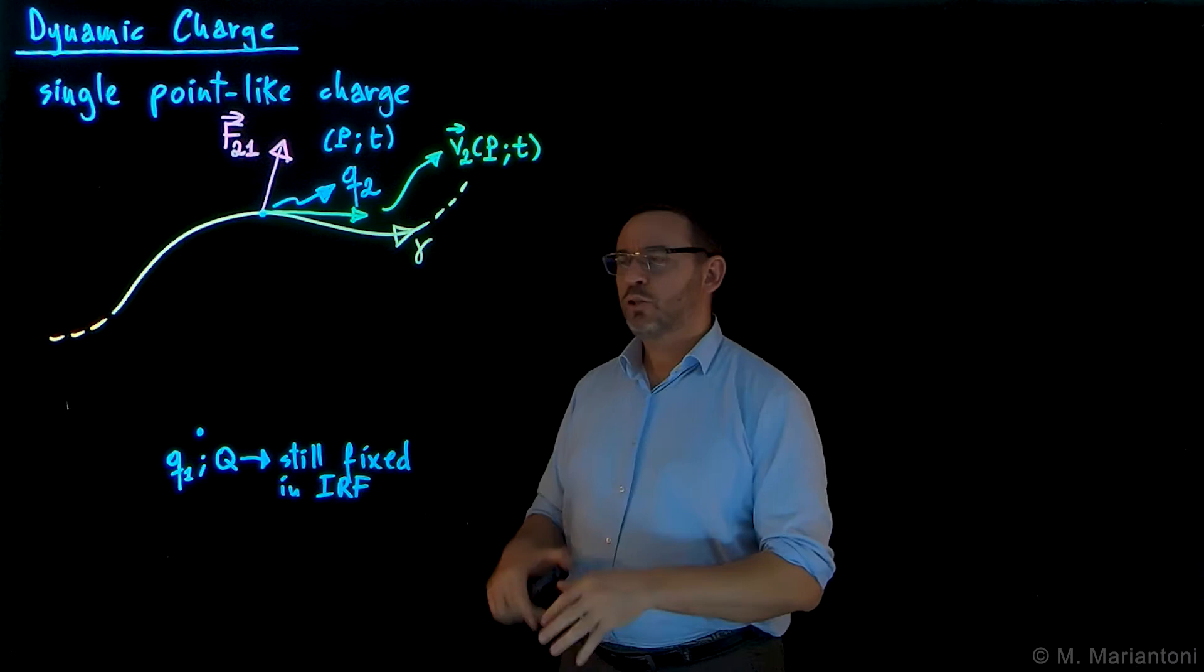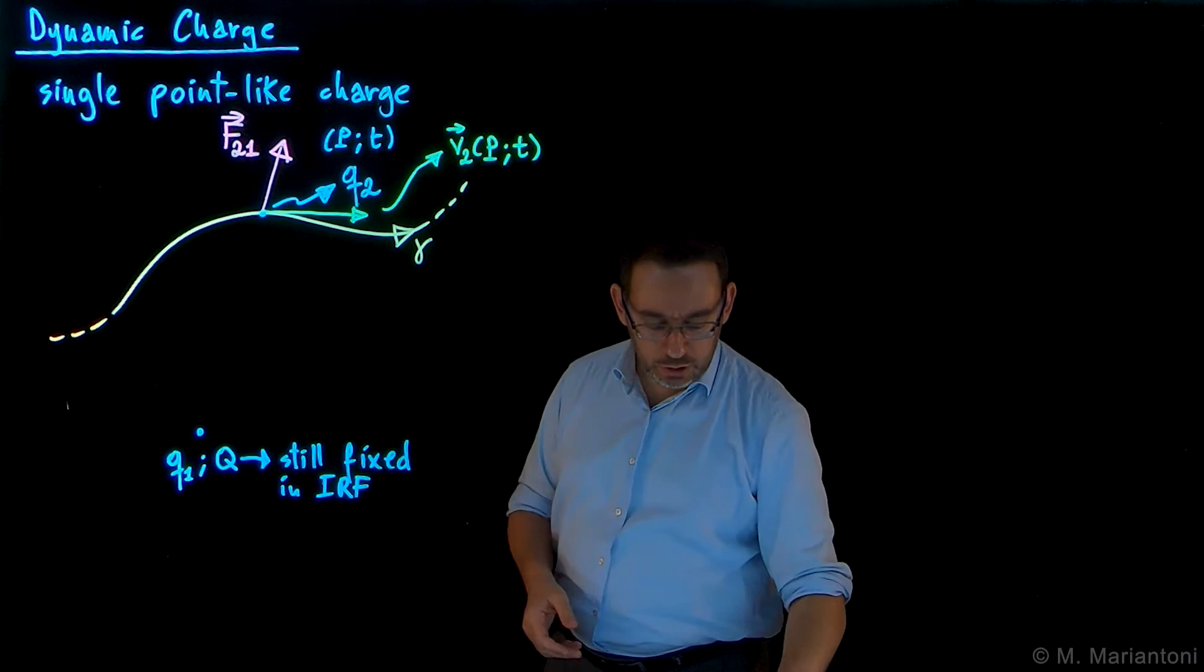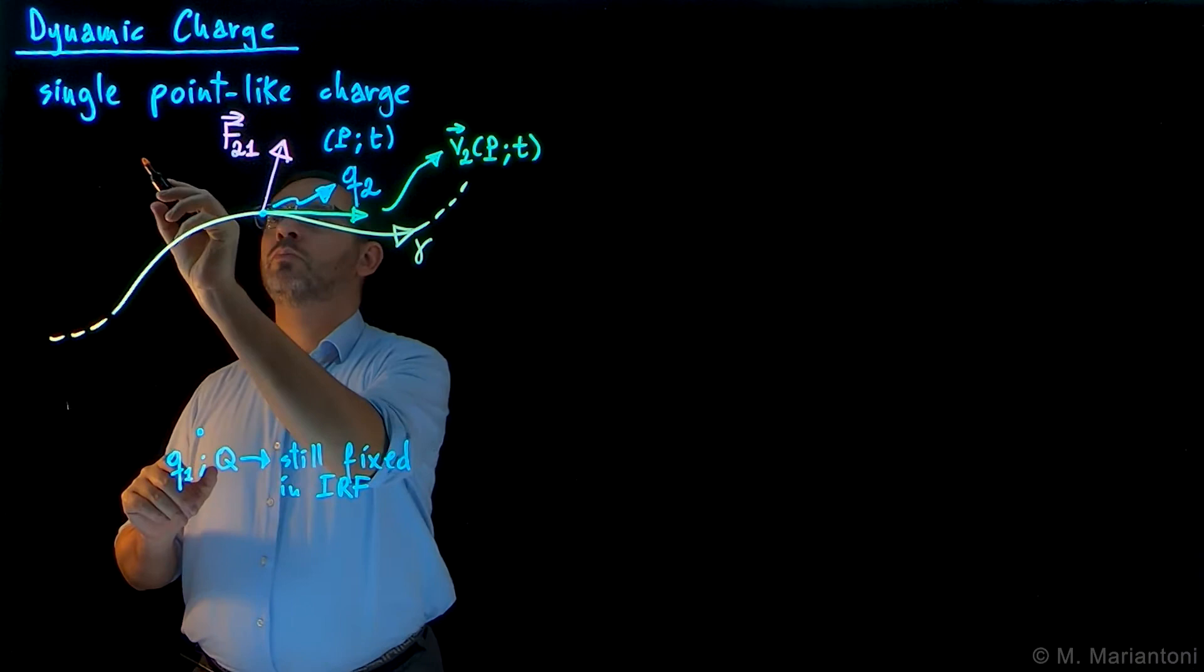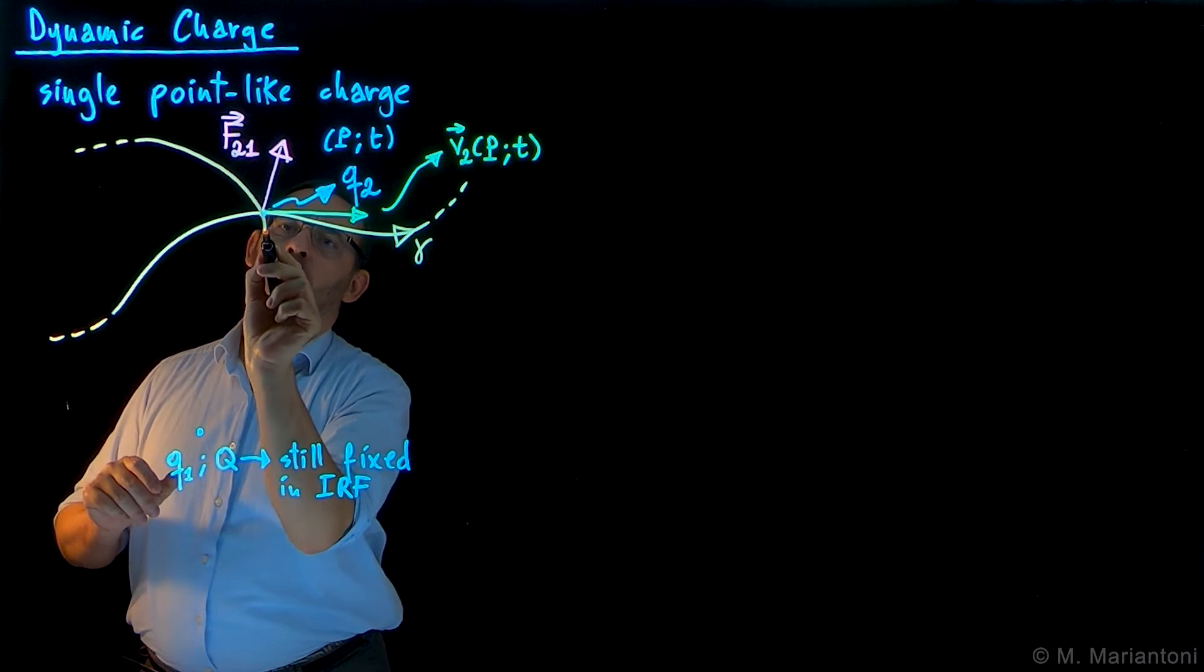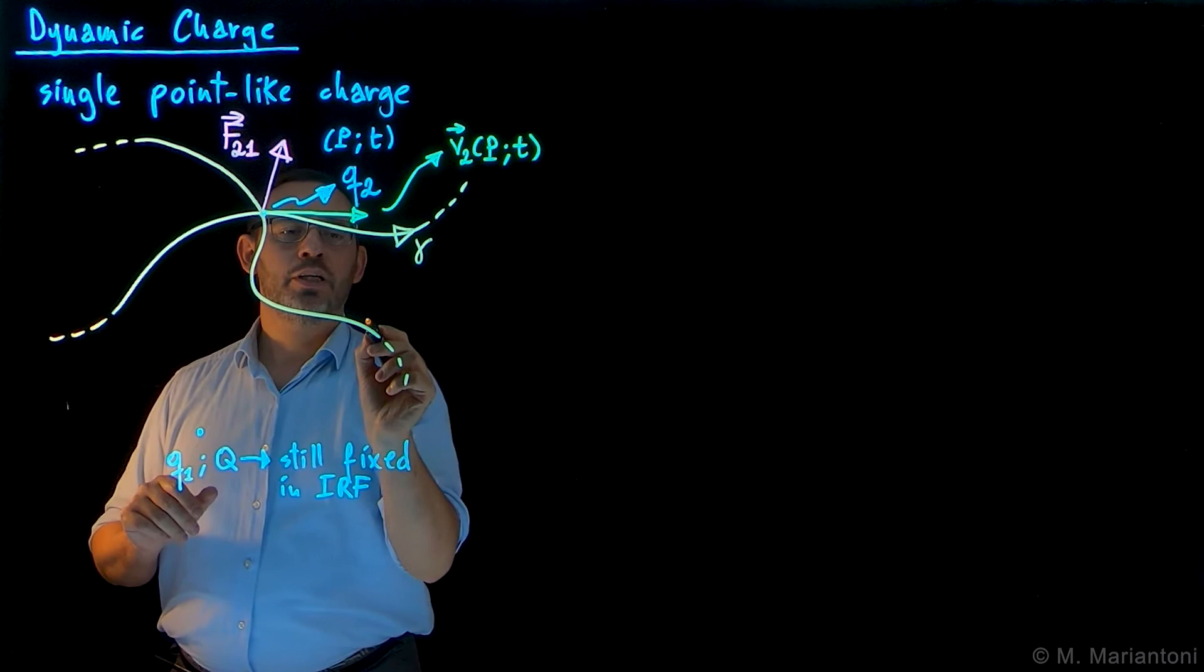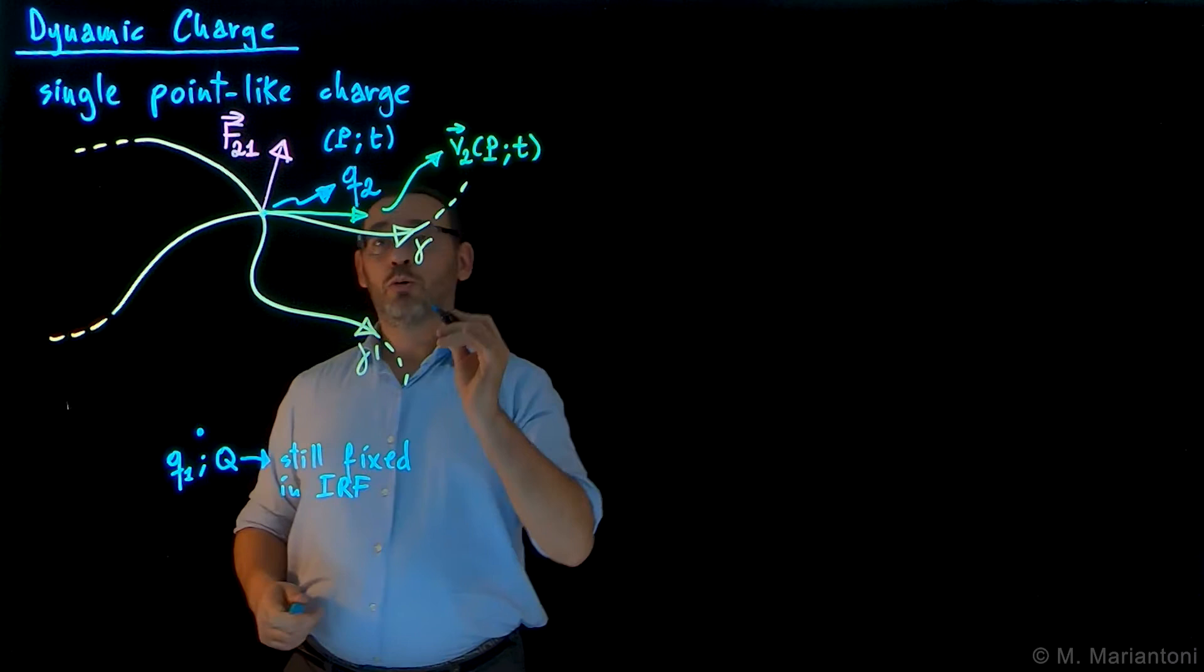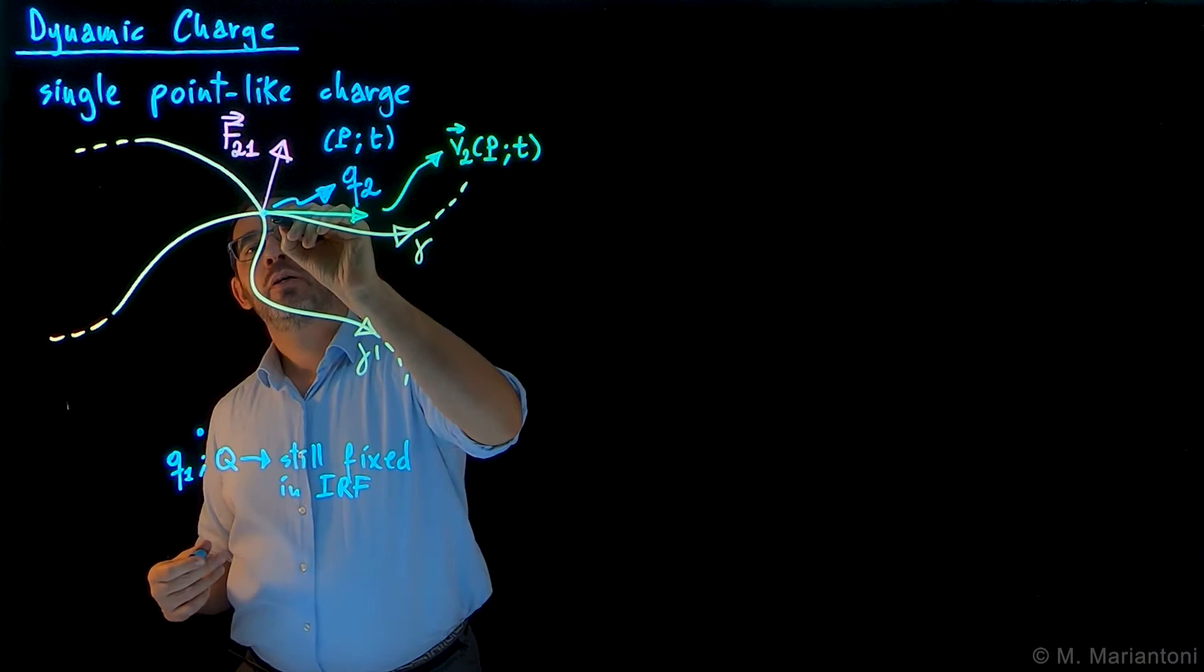We measure F21, we store it. The next thing we do, we assume that there is another single point-like charge, charge q2 prime, which moves along a different path gamma prime, still in presence of q1 which is fixed. For example, this one could be a path like this - this path we call gamma prime. In this case we have a charge particle, a single charge q2 prime, which moves along this direction.